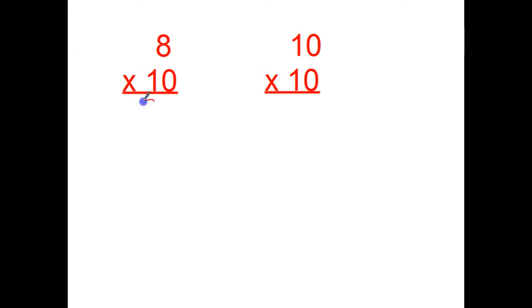8 times 10, I'm just putting down the other number which is an 8. I'm taking this zero and bringing it down here. So 8 times 10 equals 80. The same thing happens with 10 times 10. I'm taking the 10 from the top, bringing it down here, bringing this one zero down, so 10 times 10 equals 100.